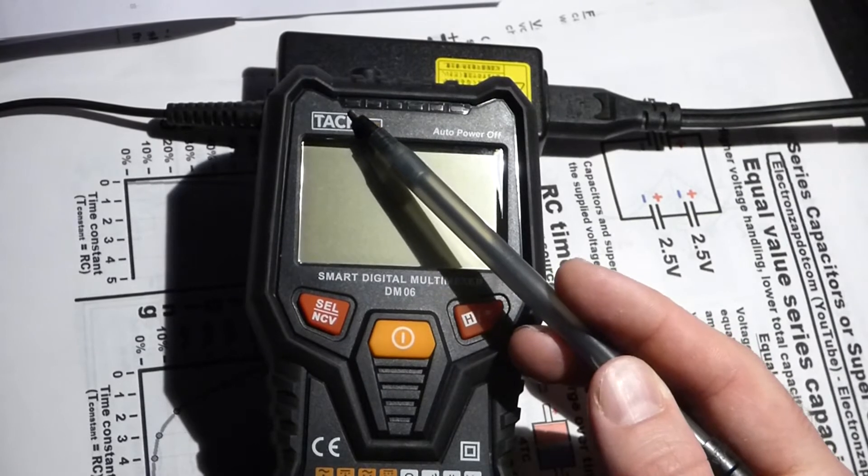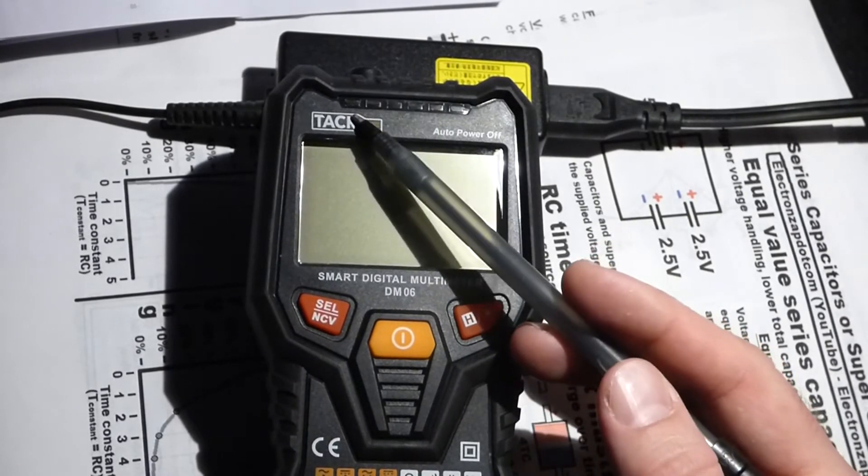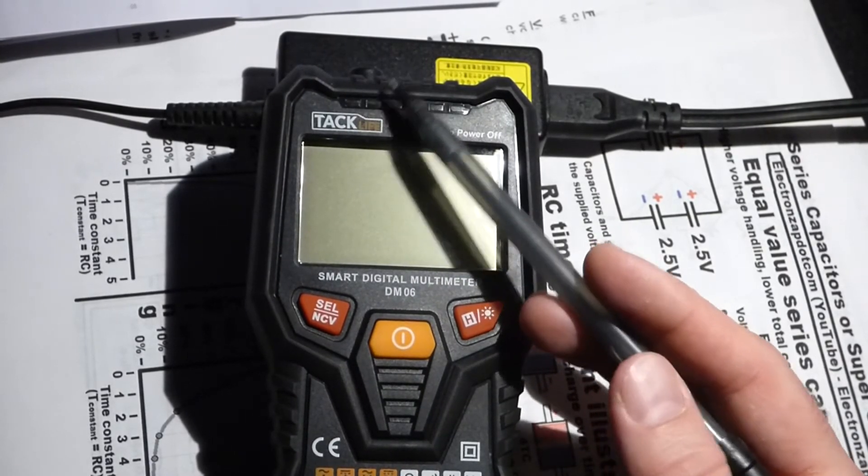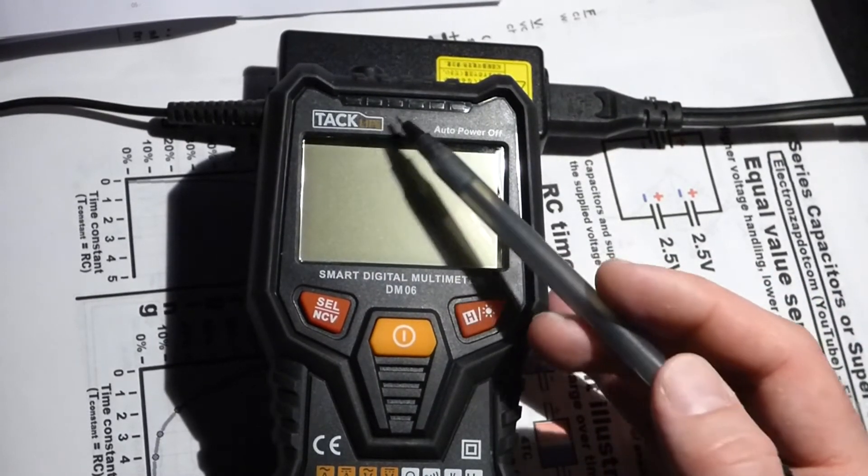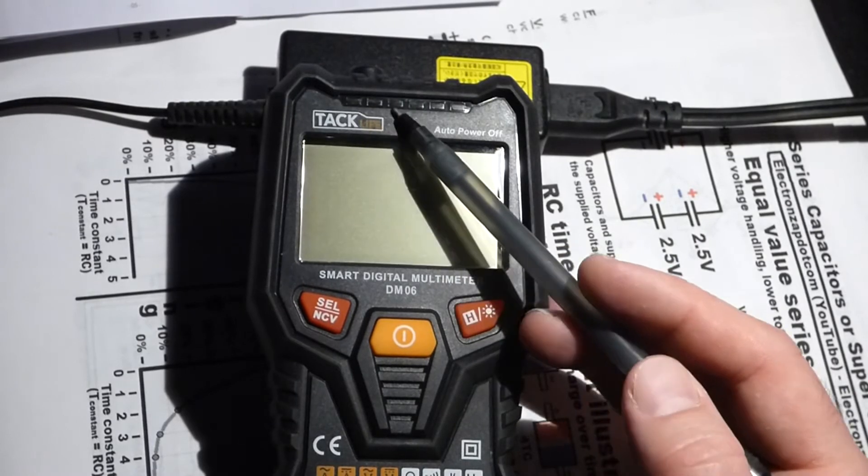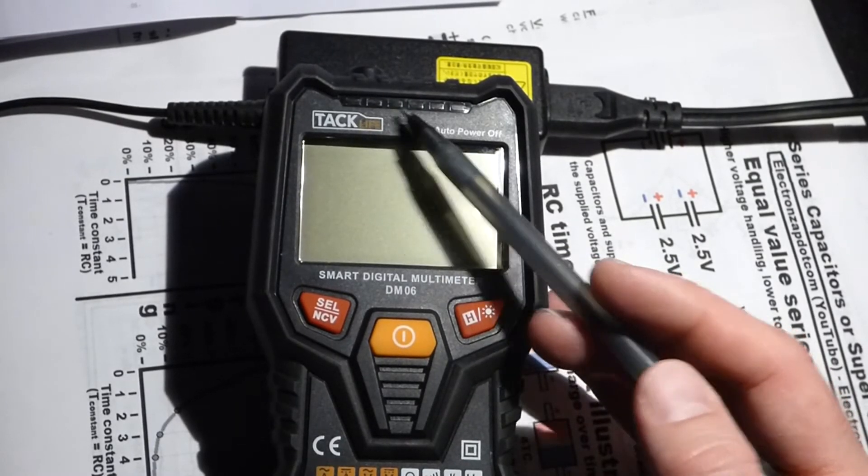We'll get two bars when it senses about 12 volts or higher. As I said we got 19 coming out of here. It will also beep when we get to about 40 volts or higher that it senses.